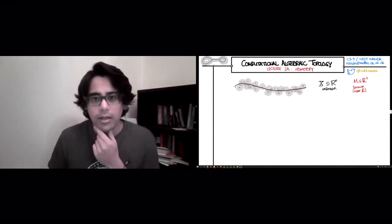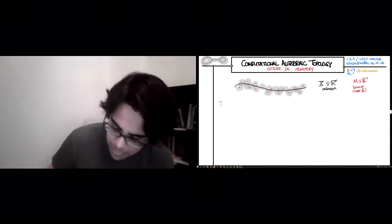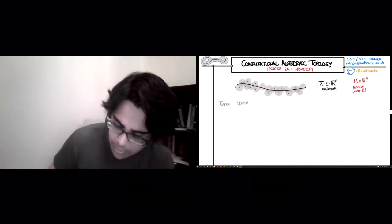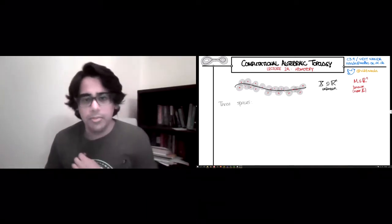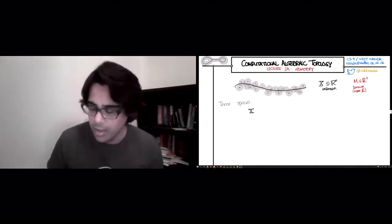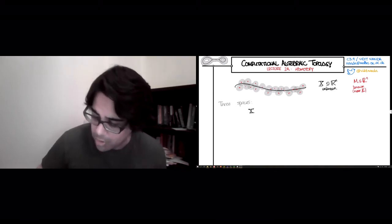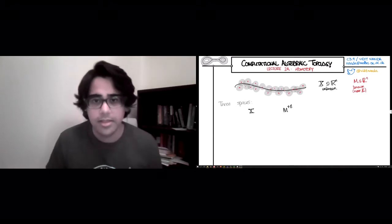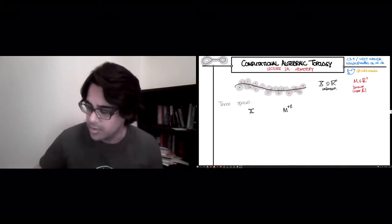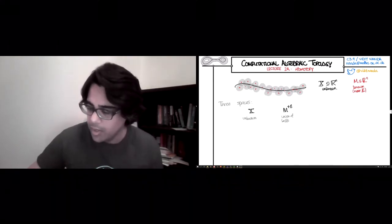Well, so let's see. There are sort of three spaces that you might want to keep track of. The first one is X, which of course we want to find but we don't know. Then there is the union of balls around M at various scales epsilon. So this is the unknown space. This is the union of balls.